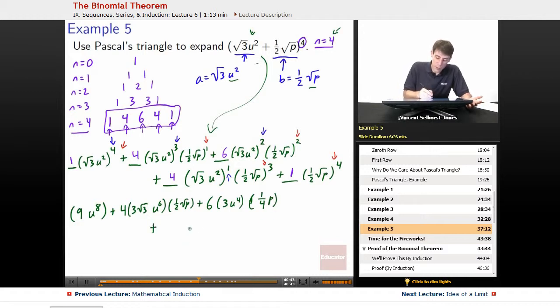Break the line once again, plus, next is 4, root 3u squared to the 1, that just stays as root 3u squared, times 1 half root p cubed. 1 half to the 3 is 1 over 8, times root p cubed is p root p, and then finally, plus 1 times 1 half root p to the 4th is going to be 1 over 16, root p to the 4th is going to come out as p squared.